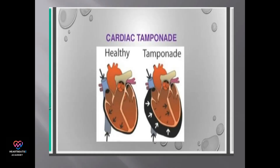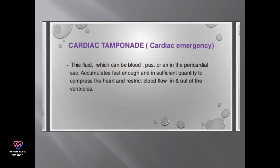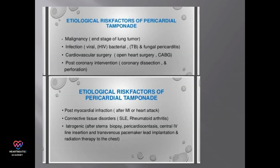Cardiac tamponade is a critical condition where fluid accumulates in the pericardial sac, compressing the heart. This fluid can be blood, pus, or air, and it restricts blood flow in and out of the ventricles.